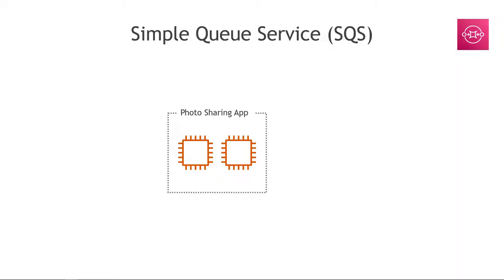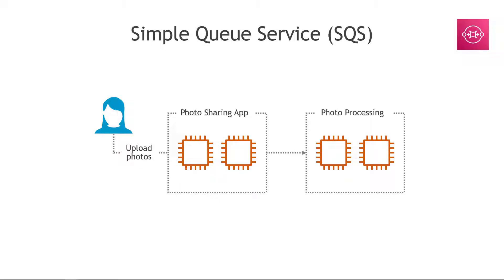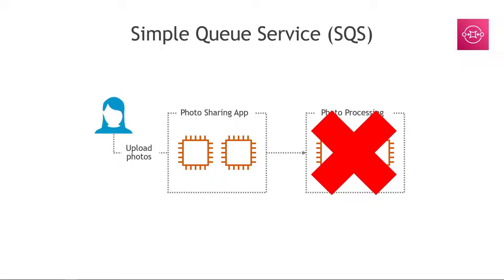Let's say you have a photo sharing application powered by EC2 instances. When a user uploads photos, you need to process them — maybe resize them into different thumbnails as well as a high-resolution version. You could send it directly to a photo processing service, but if that service goes down for even a few seconds, what happens to the photos you sent? Do you need to retry them? How do you know what worked or didn't?